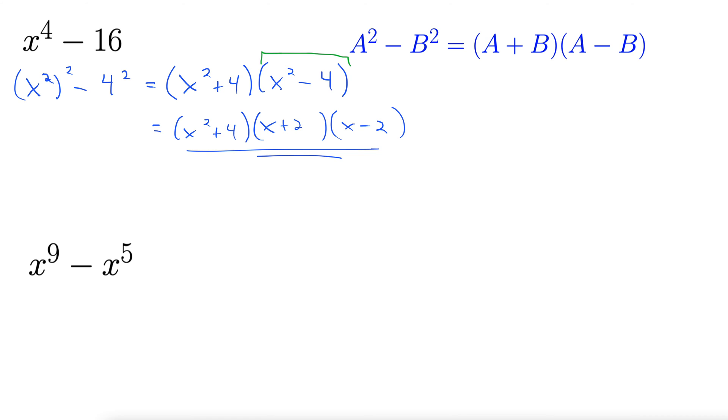Here we have x to the 9th minus x to the 5th. Well, that doesn't look much like a difference of squares at all, but remember, anytime you want to factor, the first thing you should do is try to factor out the GCF, always. So always, always try the greatest common factor, the GCF, first.